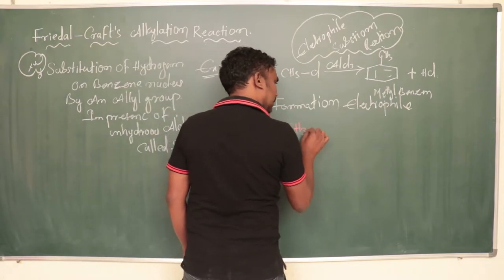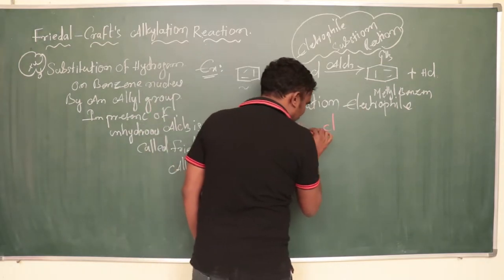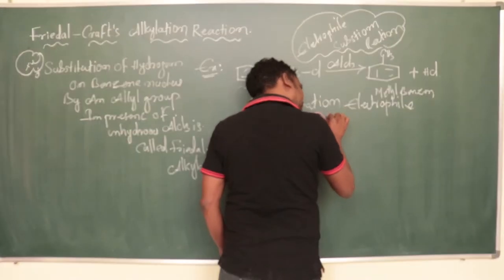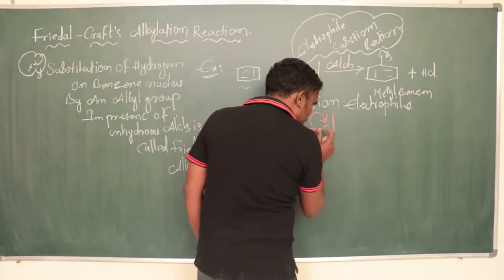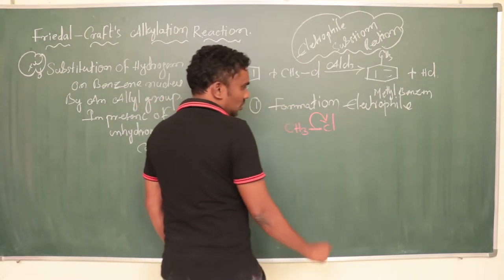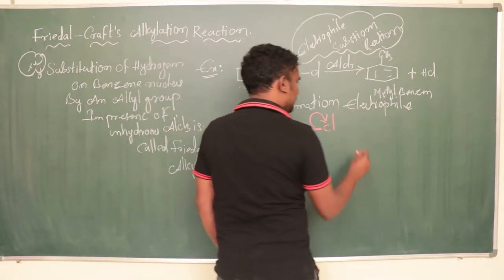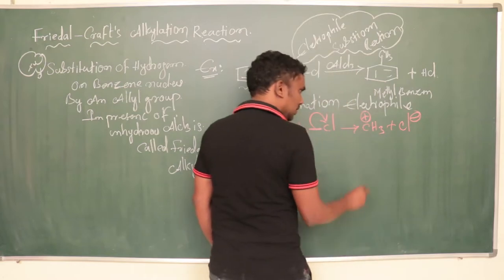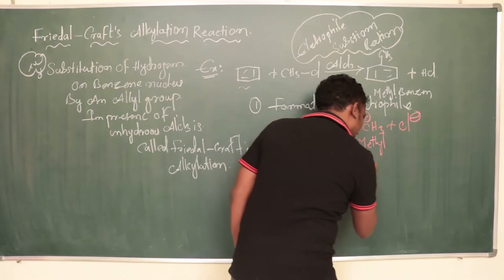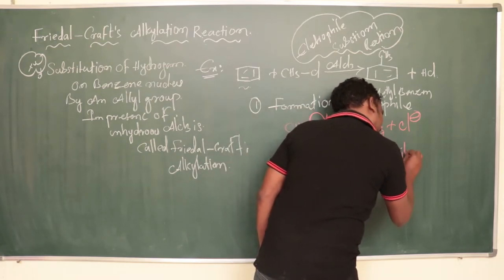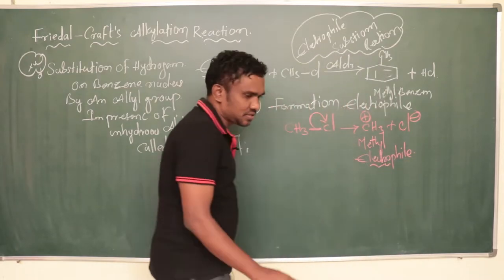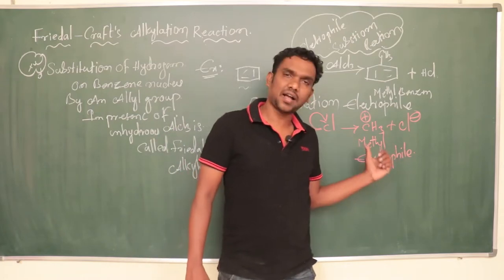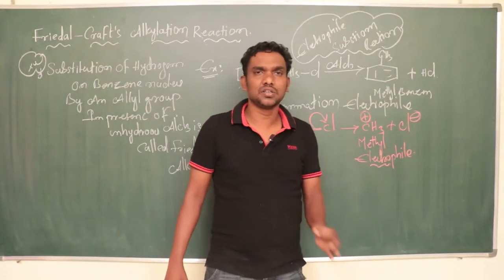Step 1 — Formation of the electrophile. In methyl chloride, one bond means two electrons. The bond breaks by heterolytic fission, which means the uneven distribution of electrons. Chlorine gets a negative charge and methyl gets a positive charge — methyl carbocation. Since methyl is an electrophile (electron-loving), it attacks the benzene nucleus. That is why this is called an electrophilic substitution reaction.